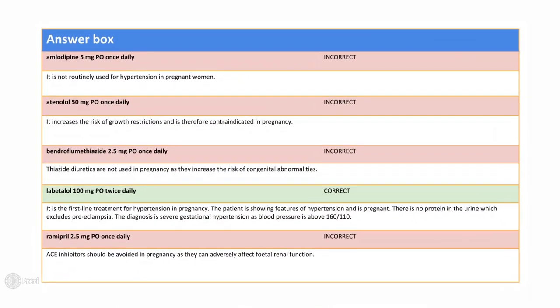Although all the other options are used to treat hypertension, they are all contraindicated in pregnancy. Amlodipine is not routinely used in pregnant women. Atenolol increases the risk of growth restrictions. Bendroflumethiazide increases the risk of congenital abnormalities. And ramipril, as an ACE inhibitor, can adversely affect fetal renal function. Labetalol is therefore the only option that can be safely used in pregnancy. This should show that you must focus on all aspects of the clinical presentation to find the most appropriate management option.